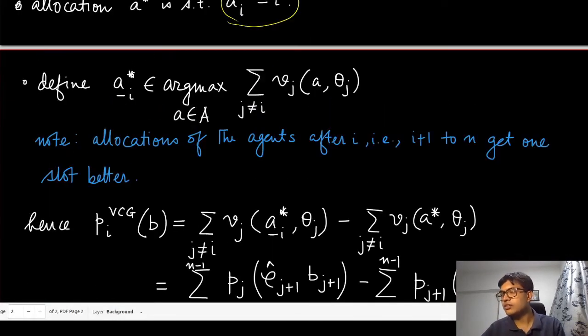Now what we are going to define is this a^*_{-i}. This is something we will be requiring when defining the VCG mechanism. If you are removing a specific agent, let us say agent i, then all the agents that were after that agent i, from i+1 to n, now start getting one better slot.